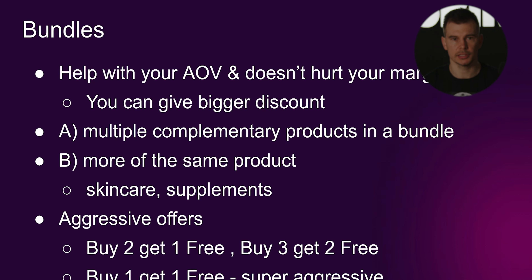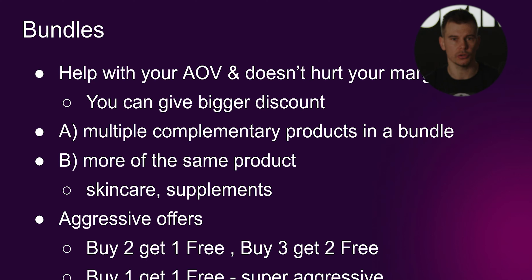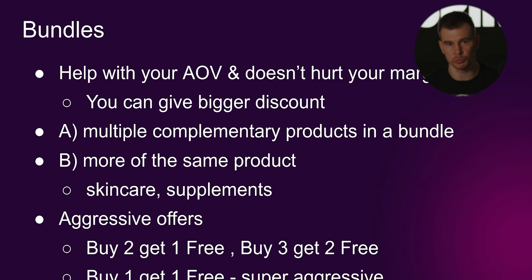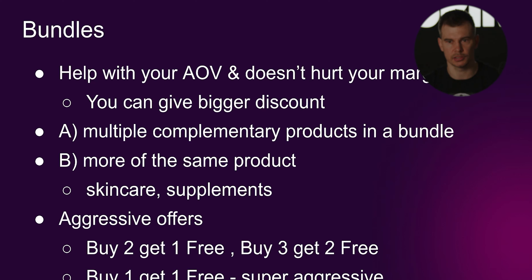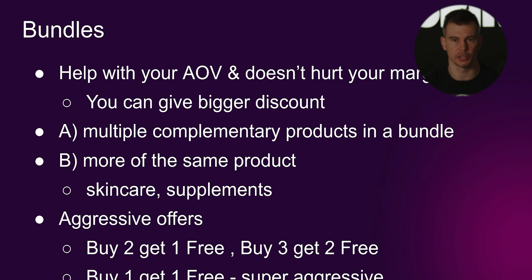My favorite is bundles. You bundle your products to increase your AOV, and then you can give a bigger discount because your margins aren't affected as much since the higher AOV offsets it. Options are complementary products — like pre-workout, creatine, and protein shake together — or more of the same, like a three-month supply. If you want to be aggressive, run tier discounts like buy two get one or buy three get two. The offer that works best for most of our clients is buy one get one free. It's super aggressive and hurts your margin most, but your AOV stays intact — giving one free is not as big a margin impact as a 50% site-wide discount.